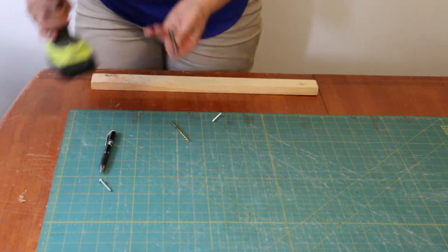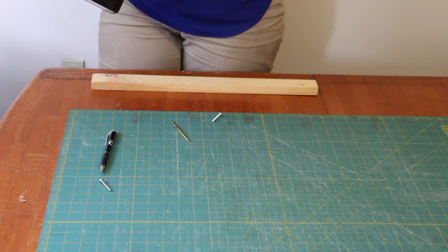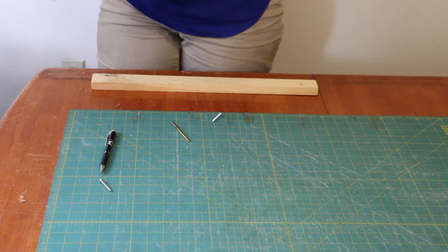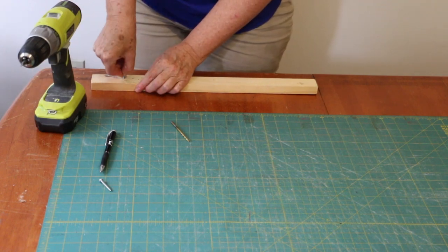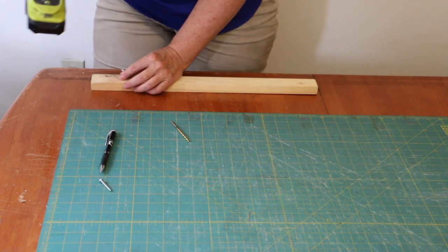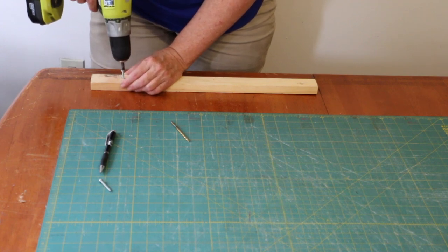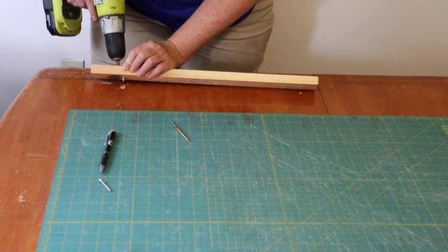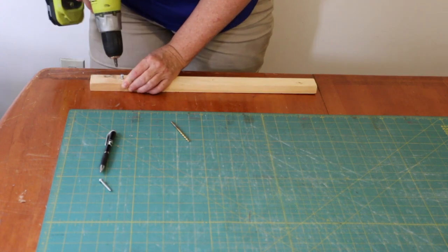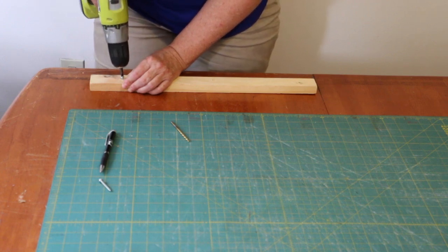Now I'm going to put my screwdriver bit into the drill. The screw is going to start into the wood there, into the guide hole, and then I'm just going to screw it down. When I can feel it go through the wood, I'm just going to check to see where that hole is in the table top and then go ahead and finish screwing the screw down into the table top.